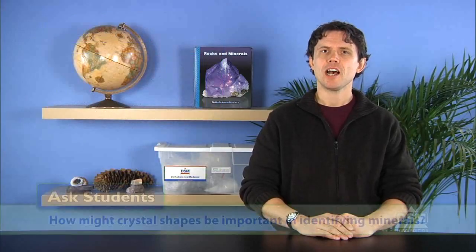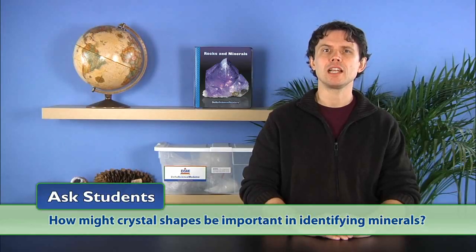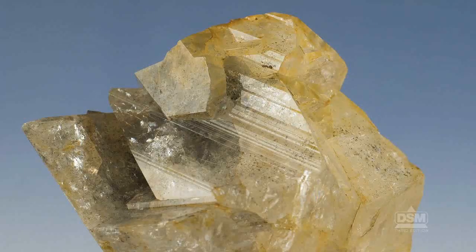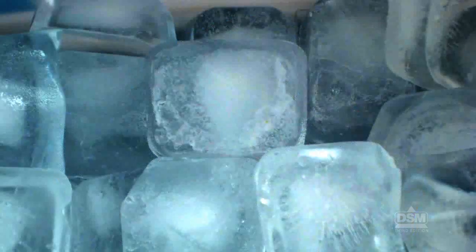Ask students, how might crystal shapes be important in identifying minerals? Explain that the shape of a crystal is the result of the definite repeating pattern of the particles that make up a mineral, and that each mineral has only one crystal shape. Because of this, the crystal shape of a mineral will always be the same, no matter where on earth a sample of that mineral is found.